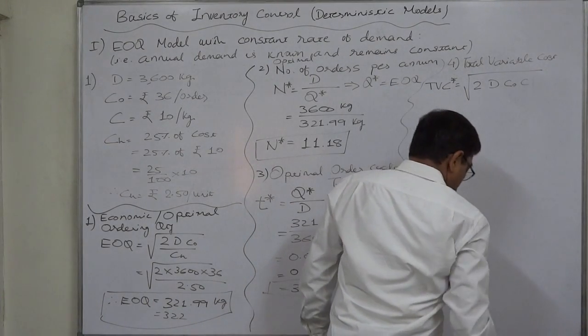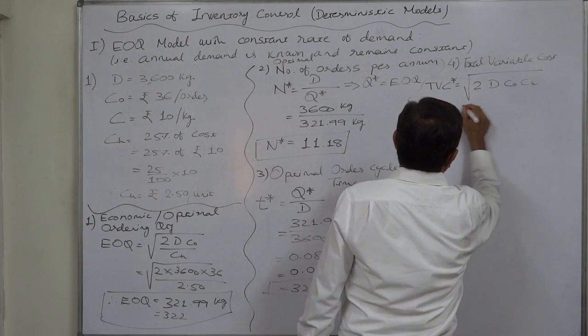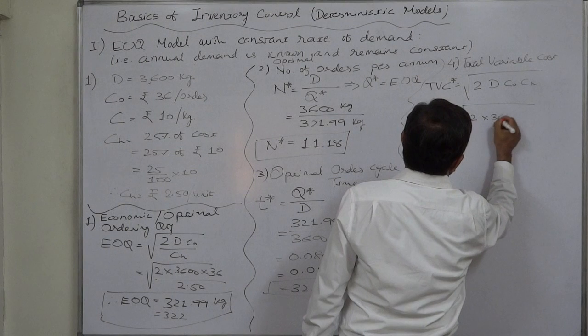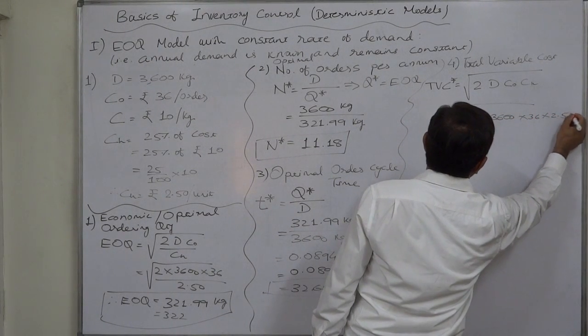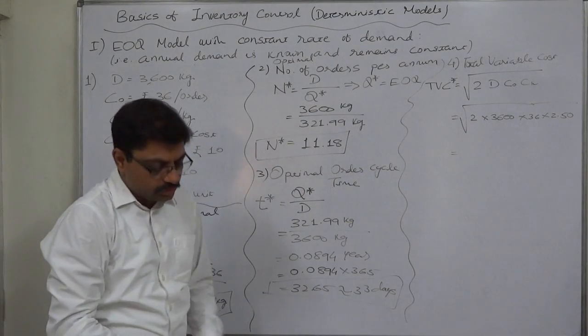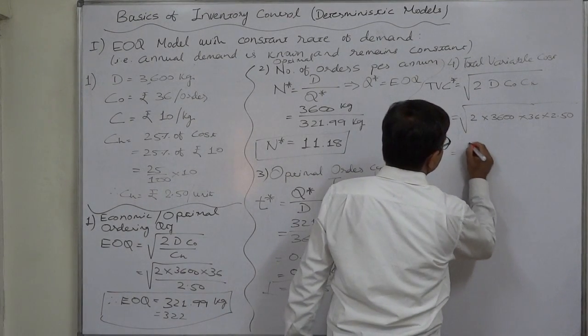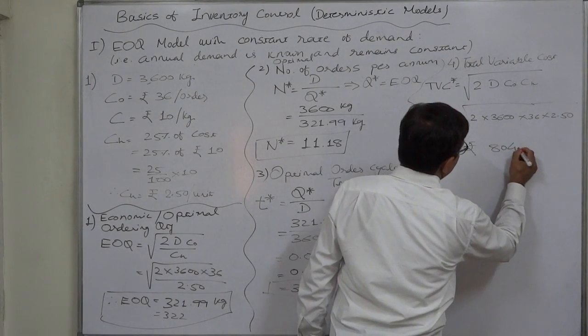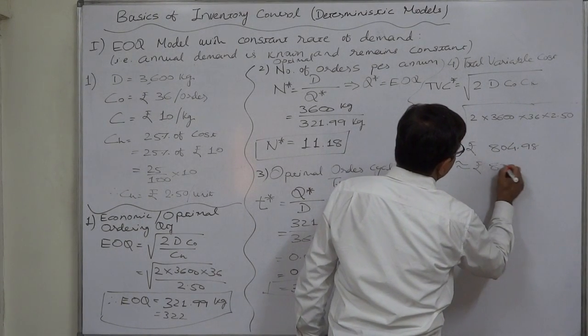Yes. Square root. That will be 2 into 3600 into 36 into 2.5. The whole square root. It comes to 804.98 rupees. 804.98. That is approximately rupees 805.